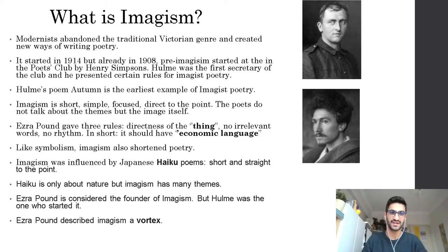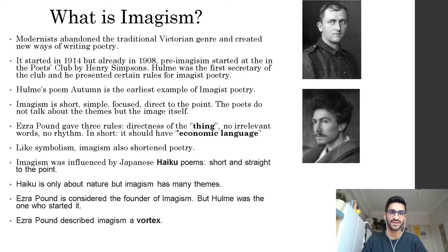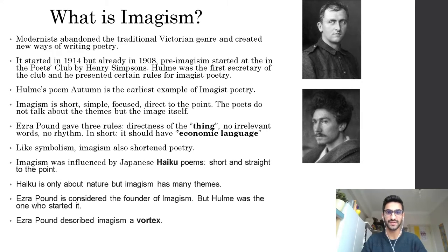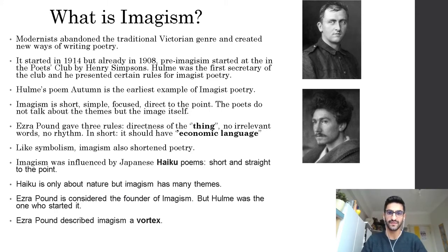Imagism itself started in 1908 with pre-imagism at the Poets' Club. Hulme the poet was the first secretary of this club and he presented certain rules for imagist poetry. The picture shown here is Hulme. He was the one who actually started imagist poetry by writing his first poem, 'Autumn,' which is the earliest example of imagist poetry. It was written in 1908.